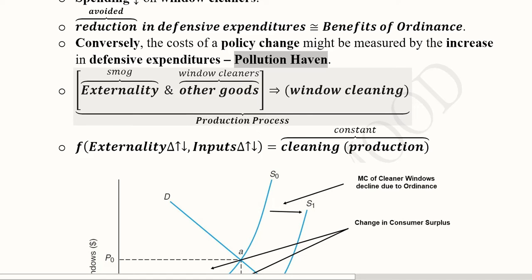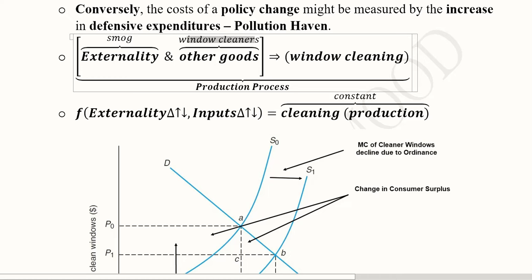What happens is that the window cleaning process is the output and the inputs are the externality, which in this case is smog, and the other inputs that are being used. These are window cleaners, those tools, brushes or mops or chemicals. These are the things that we can use. And this basically gives rise to a production process in which we are getting cleaner windows, and there are two inputs to it.